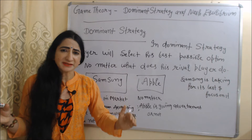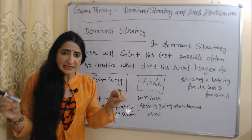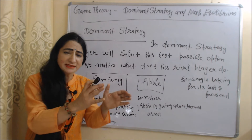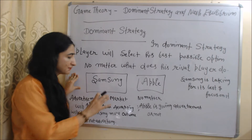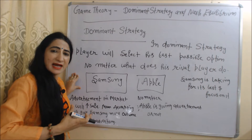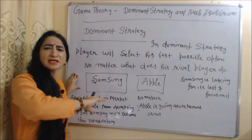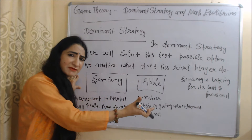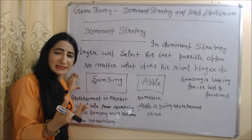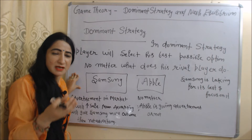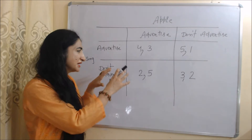In dominant strategy, a player will select his best possible option no matter what his rival player does. For example, as we know Apple is a competitor of Samsung. Advertising in the market will increase Samsung's sales — advertising will give more outcome to Samsung rather than no advertising. That's why Samsung will definitely advertise in the market no matter what Apple does. Samsung is looking for its best, so we can say that advertisement will be the dominant strategy of Samsung.